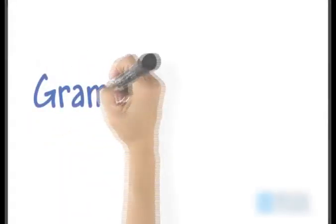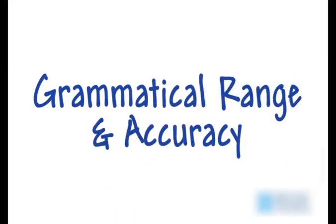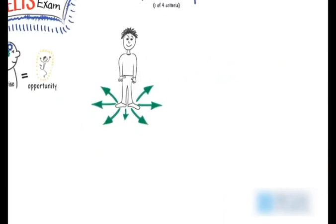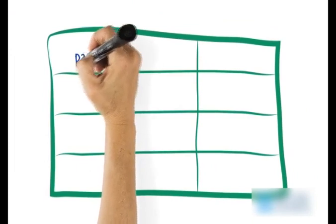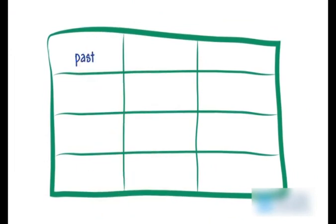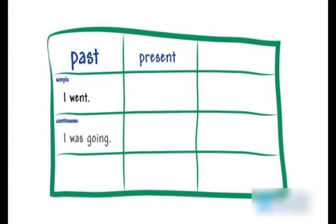Here we look at the criteria of grammatical range and accuracy. This criterion focuses on the range and accuracy of the grammar demonstrated by the test taker. For grammatical range, consider whether what you are describing happened in the past — use past tenses.